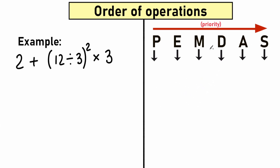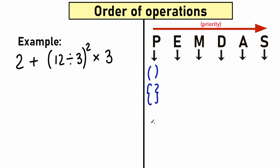We are talking about PEMDAS — the basic order of operation. Each letter stands for something. Let's start with P, which stands for parentheses. We are talking about this type of bracket — grouping symbols. That includes regular parentheses, squiggly brackets, and square brackets. People who use BODMAS use this type of bracket as well. So P stands for parentheses, squiggly brackets, and brackets.